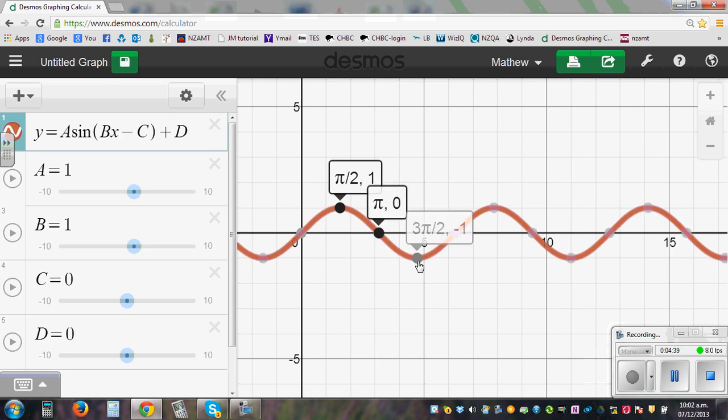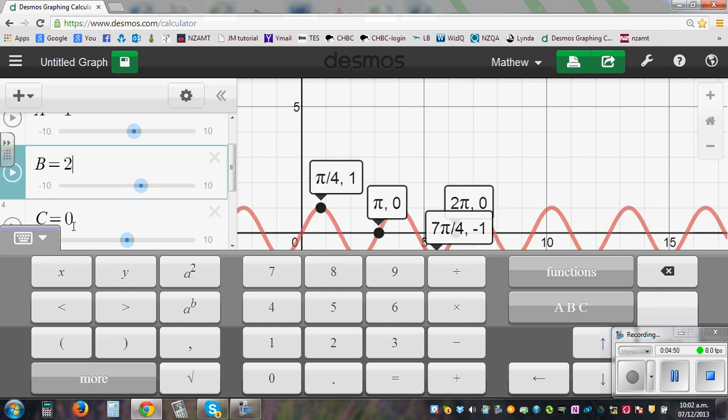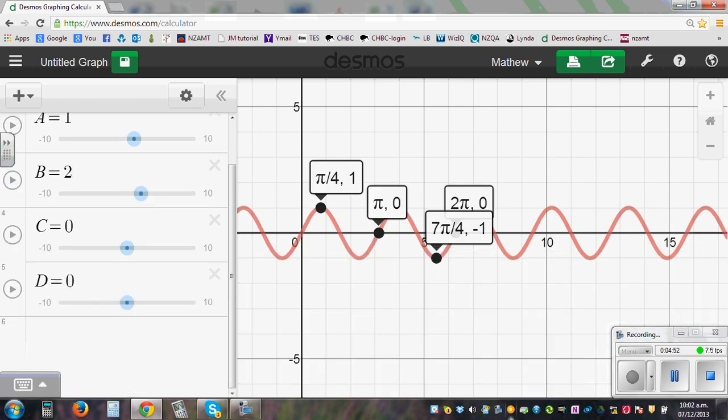This is pi. This is 3 pi by 2. This is 2 pi. So this is 1 cycle. So what happens if you change it to 2. All the numbers have changed here. So this is 1 cycle of pi. And within 2 pi, it has 2 cycles.